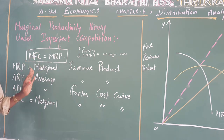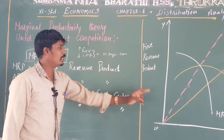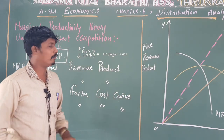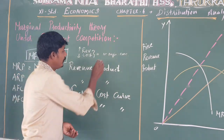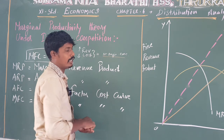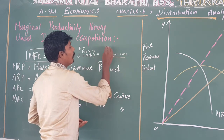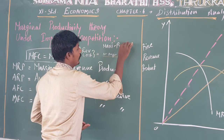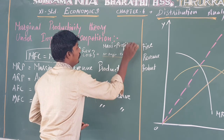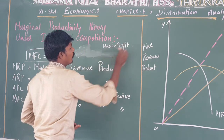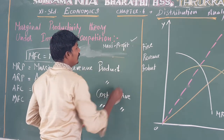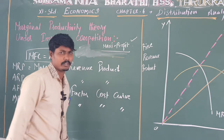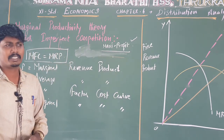The MFC and MRP diagram shows conditions of no profit or maximum profit.